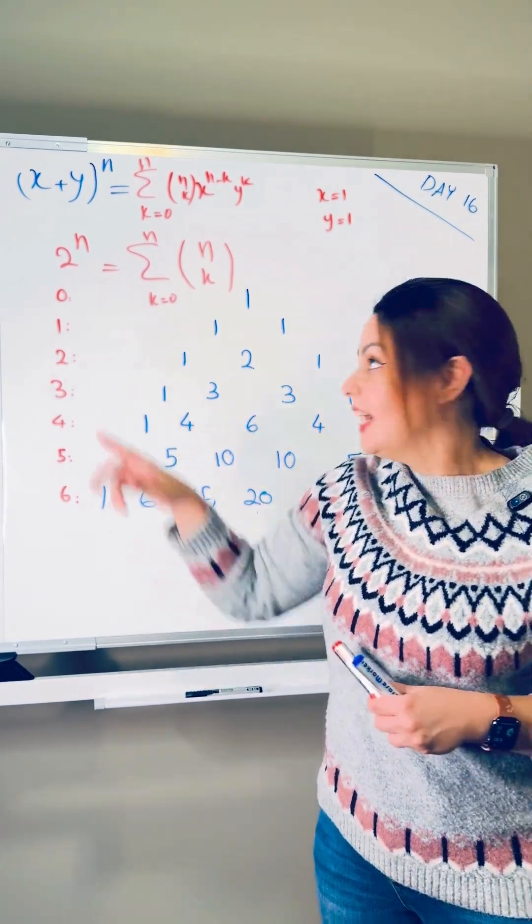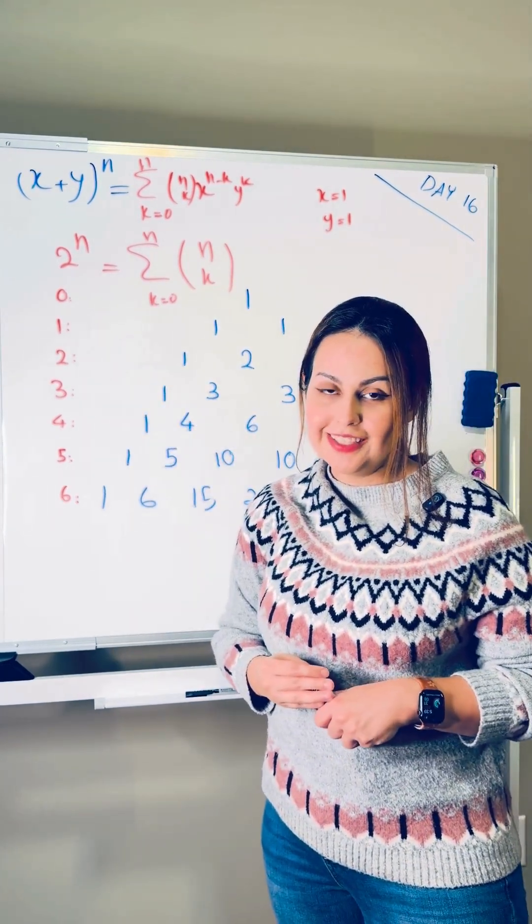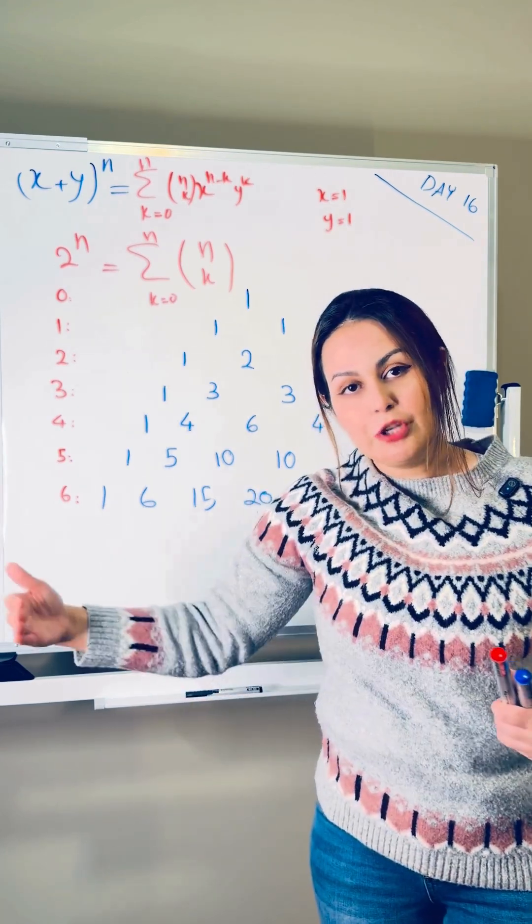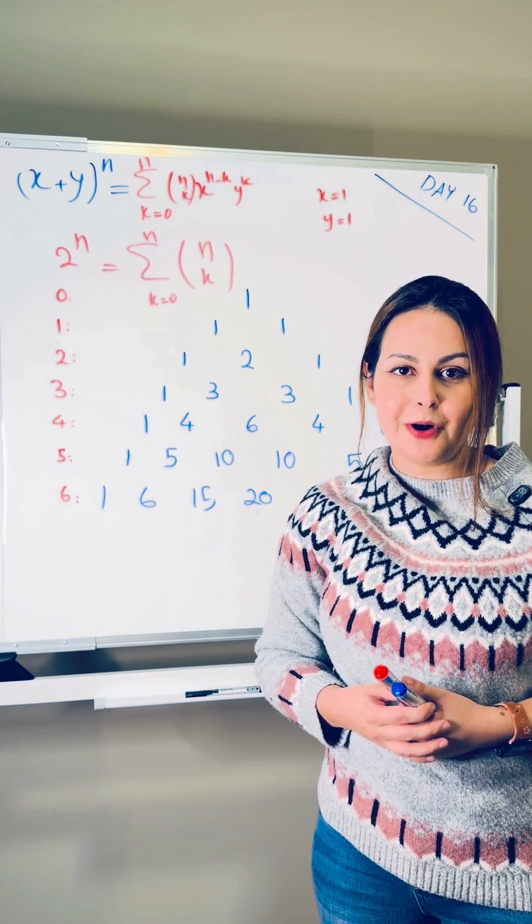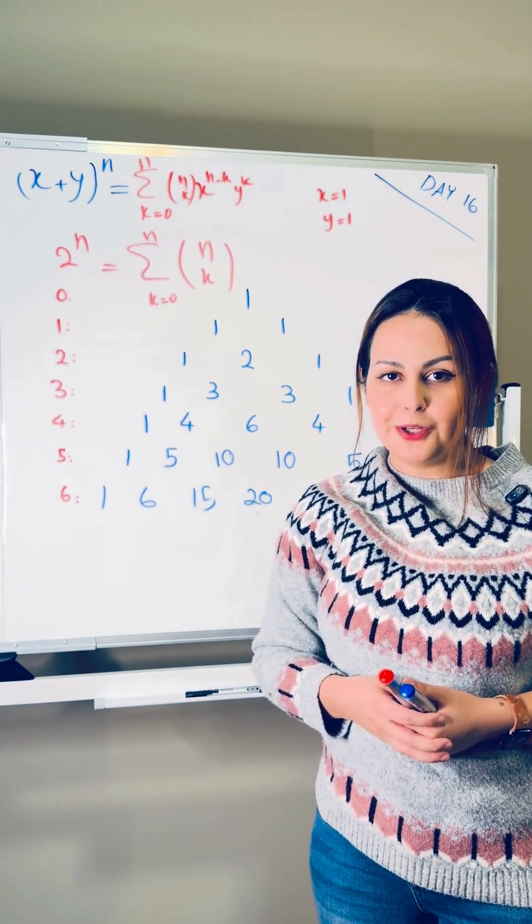And the left hand side is 2 to the power of n, explaining why the summation of row n of Pascal's triangle is equal to 2 to the power of n. It actually follows binomial expansion.